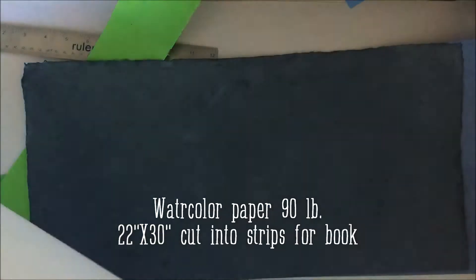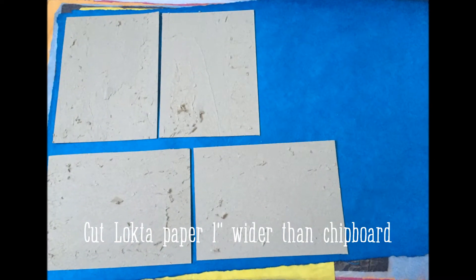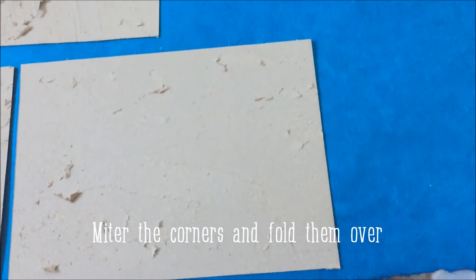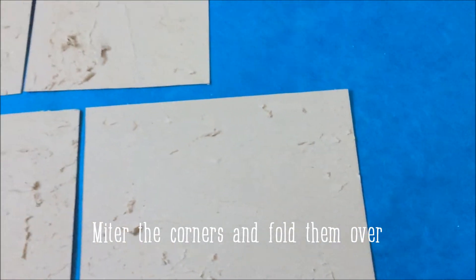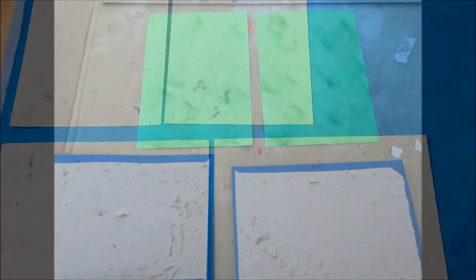I also used really large sheets of watercolor paper, about 90 pounds, and I cut them into strips for the interior of the book. So I covered the chipboard with the Lokta paper, cutting about an inch around each piece of chipboard, and then using the spray adhesive to cover the chipboard with the Lokta paper.